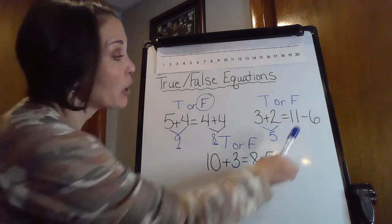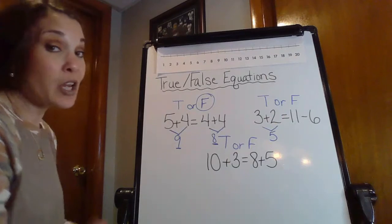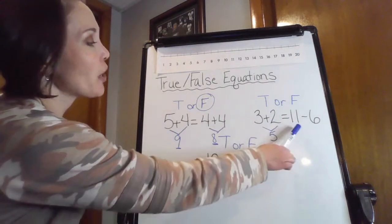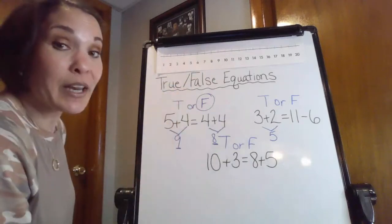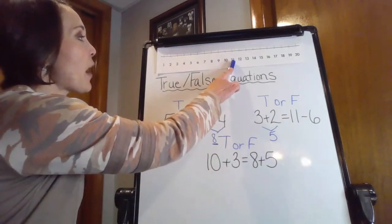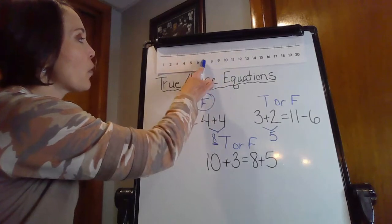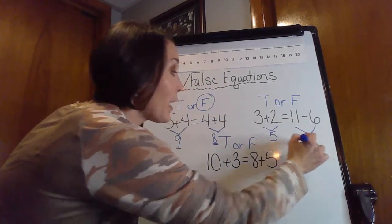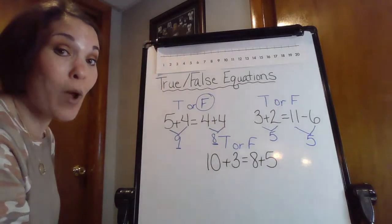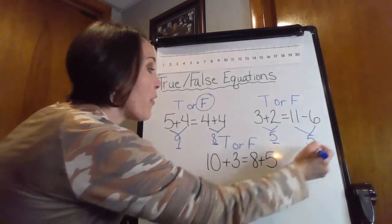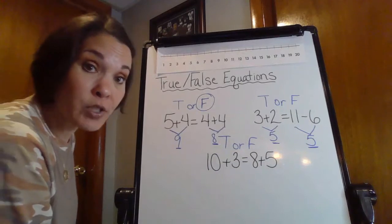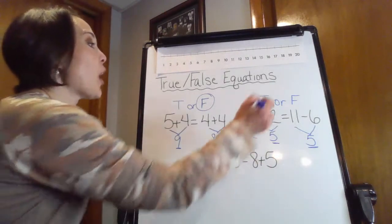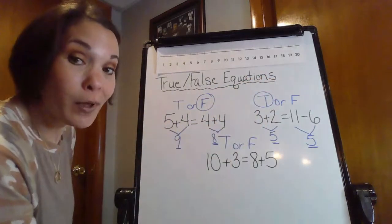But now I want to go ahead and solve for 11 minus six. So I'm not going to be counting on this time. Let's count back. So I'm going to start on my 11 and I'm going to count back six. So here I am. 11. One, two, three, four, five, six. Oh, it's ending on a five as well. So look, I'm comparing five and five. Are those numbers exactly the same? Absolutely. So that one is true.